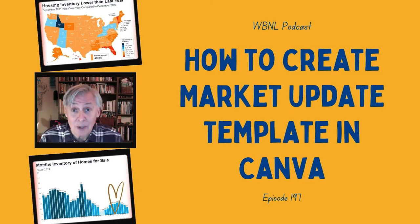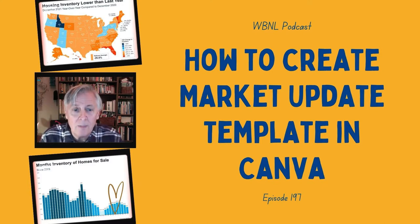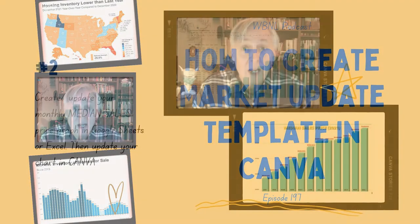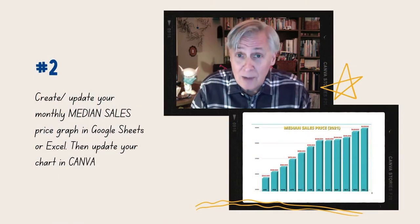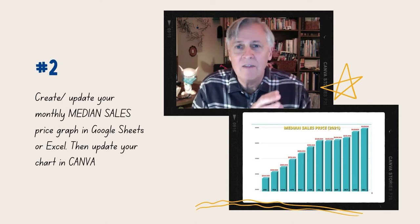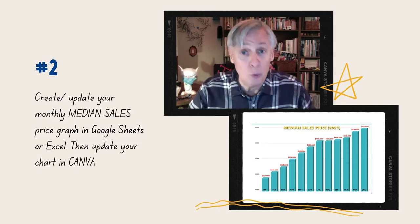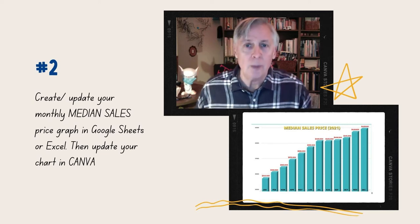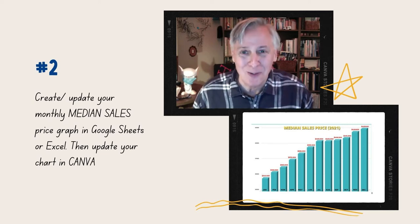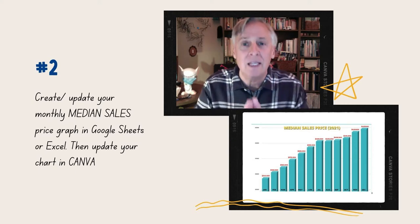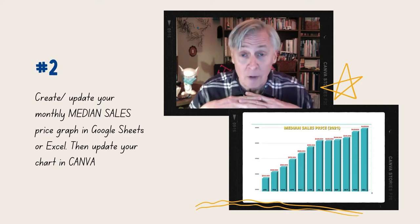Before we get to actually building out the entire slide deck for the market update, I want to jump back to step number two of Jan's video where we talked about creating the median sales price graph. There are a lot of different ways you can build graphs in Canva, but I don't find the functionality to be all that great. So what we decided was to actually build a graph in Google Sheets. You can use Excel if you wanted to as well — just use whatever is the easiest program for you. We're in Google Drive all the time, so Sheets was the best way for us.